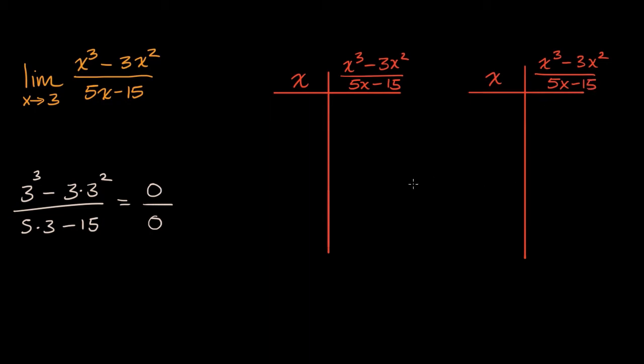The reason why I set up two tables, I didn't have to do two tables, I could have done it all in one table, but hopefully this will make it a little bit more intuitive what I'm trying to do, is on this left table, I'm going to let's try out x values that get closer and closer to three from the left, from values that are less than three. So for example, we could go to 2.9 and figure out what the expression equals when x is 2.9. But then we could try to get even a little bit closer than that. We could go to 2.99. And then we could go even closer than that. We could go to 2.999.